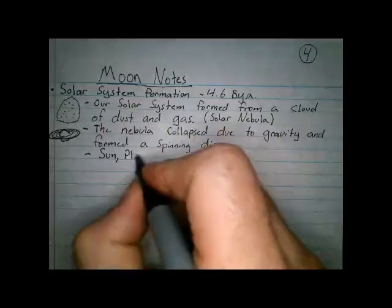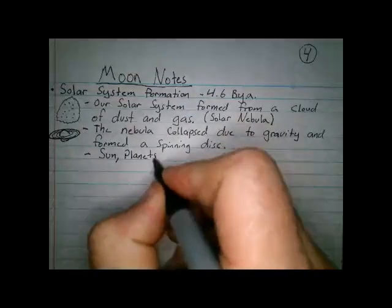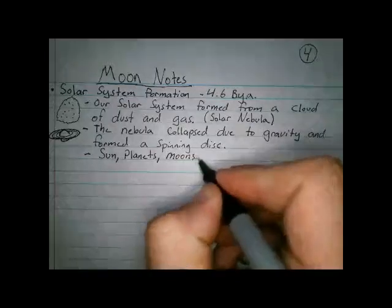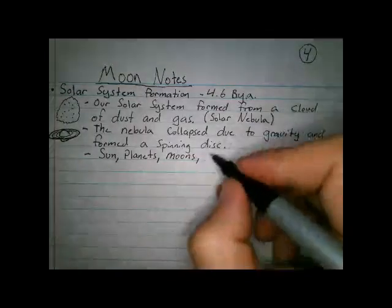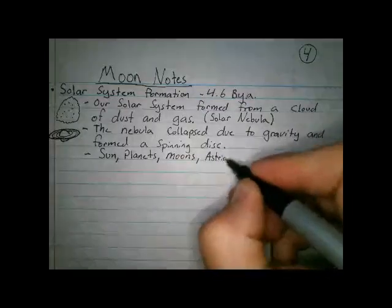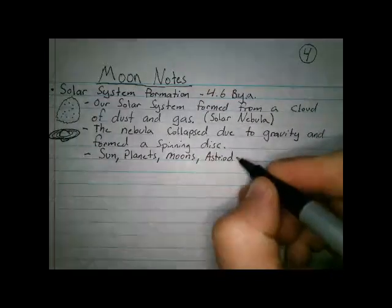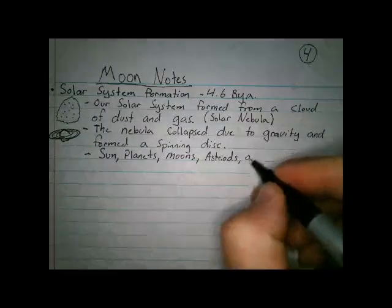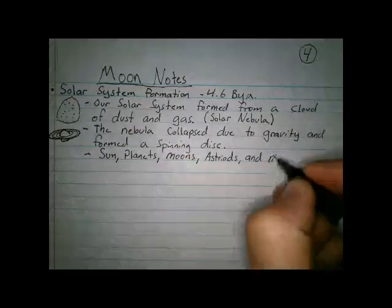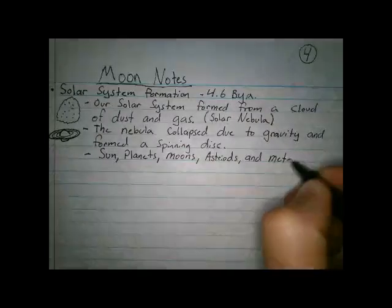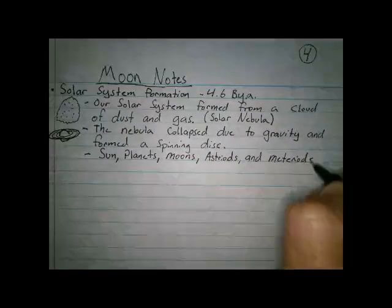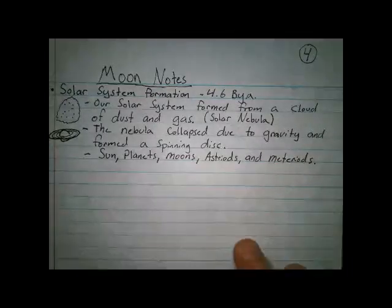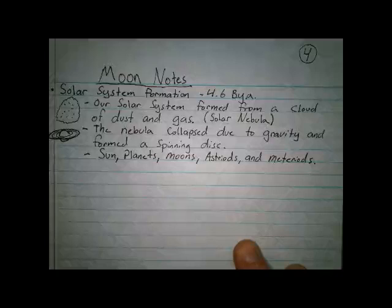And all the planets, all of our moons, asteroids, and meteoroids. And that's it for solar system formation.